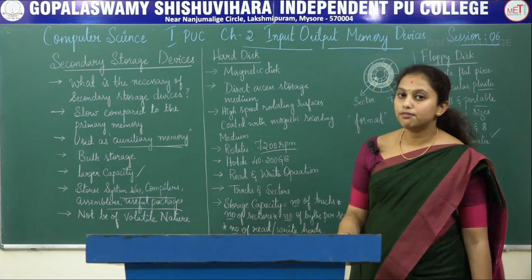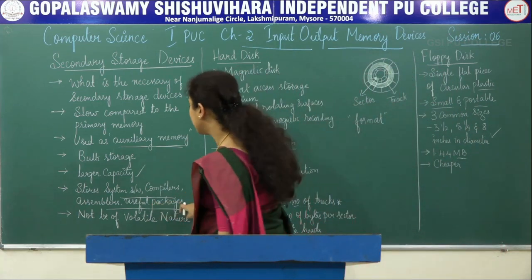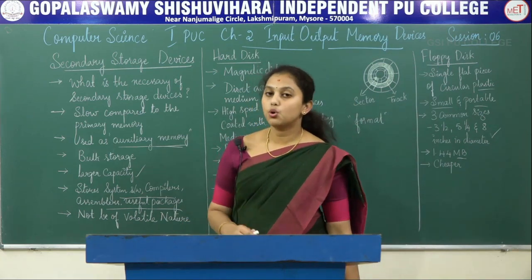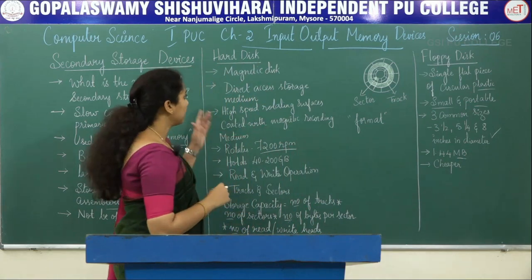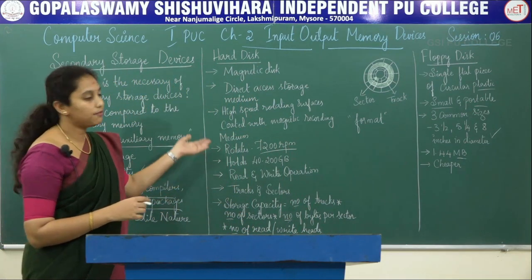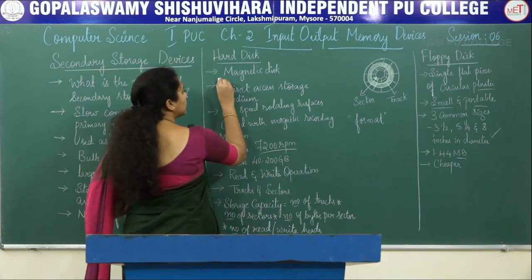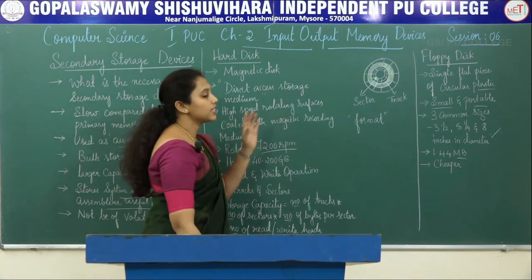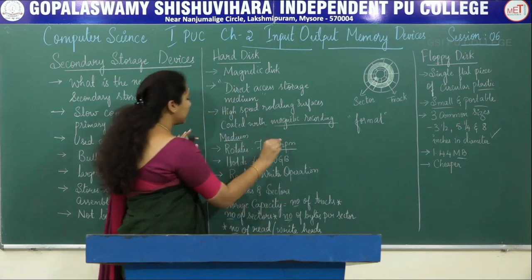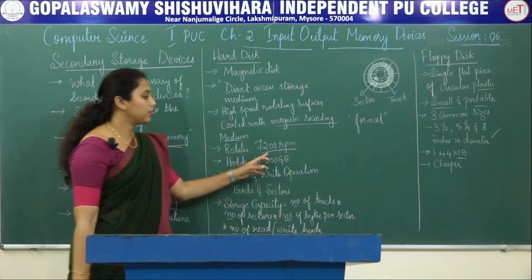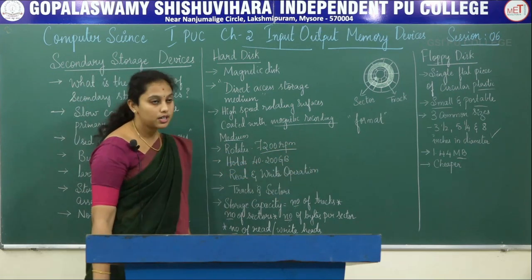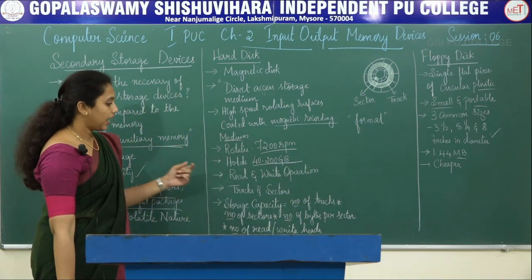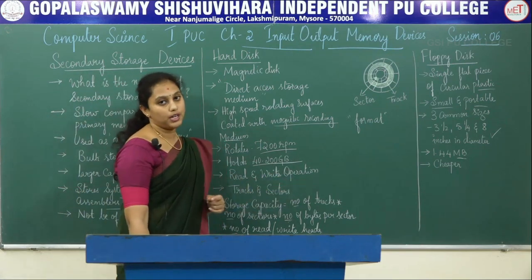Secondary storage stores system software, compilers, assemblers, and useful packages, and should not be volatile — it should store data permanently. Regarding hard disk, it contains high-speed rotating surfaces coated with magnetic recording medium. It rotates at a speed of 7200 rotations per minute and holds 40 to 200 GB of data, with read and write operations supported.